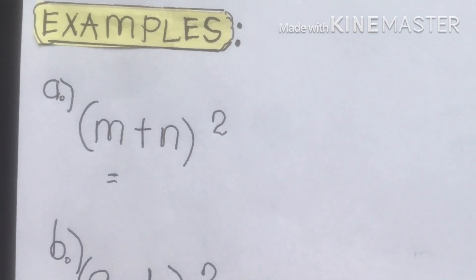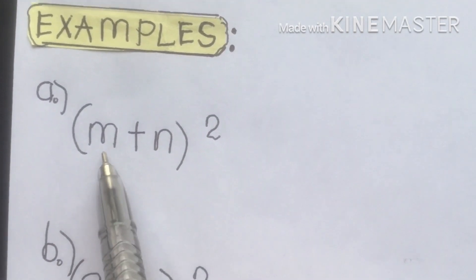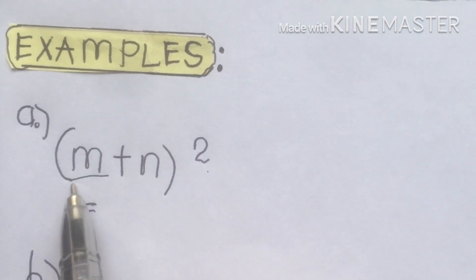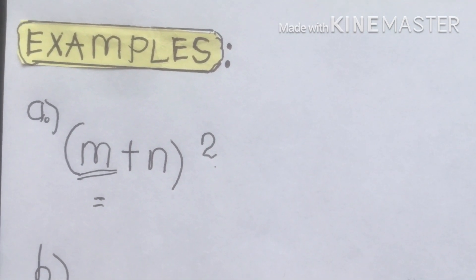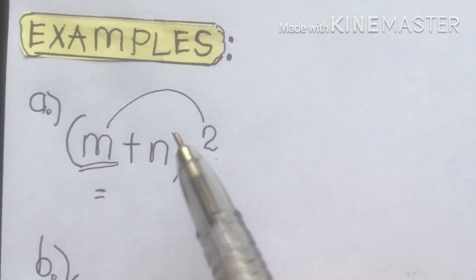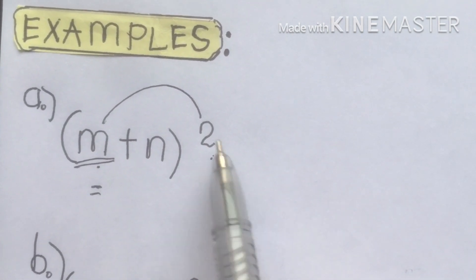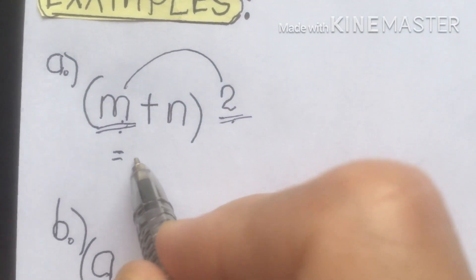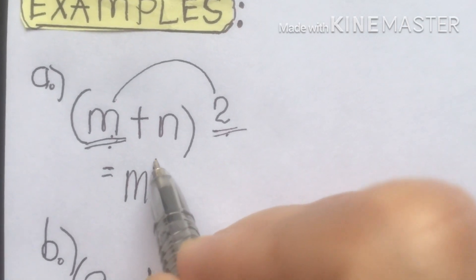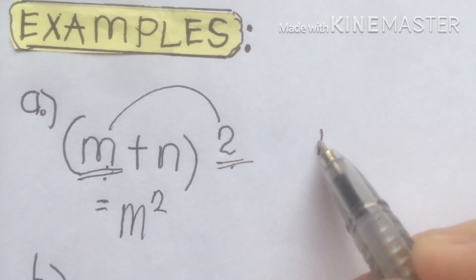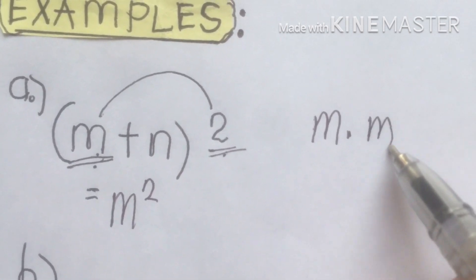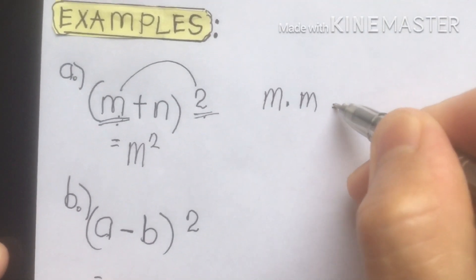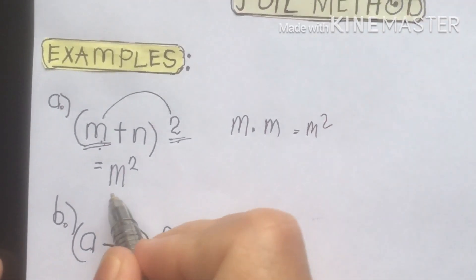We're going to start with the first given equation: (m + n) squared. We solve the first term, which is m. M multiplied by m gives m squared — because you're going to multiply it twice, m times m, and that's why the result is m squared.